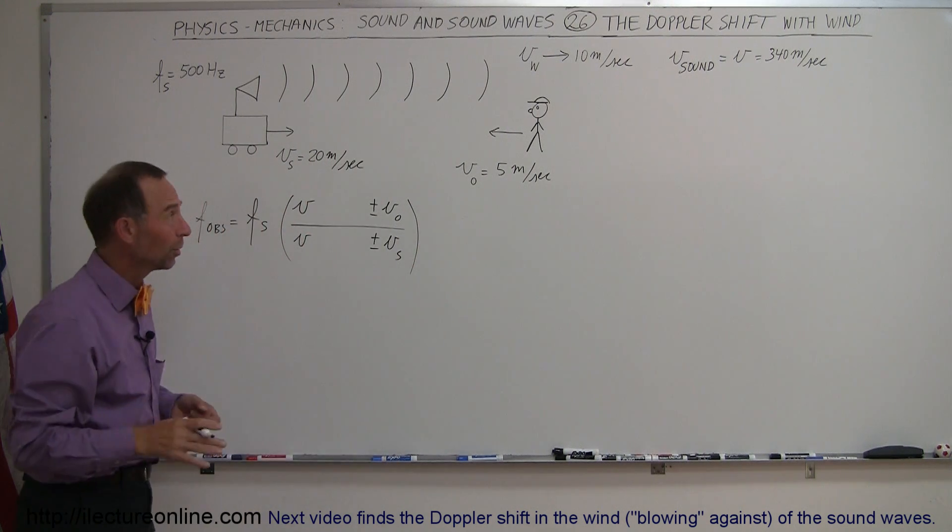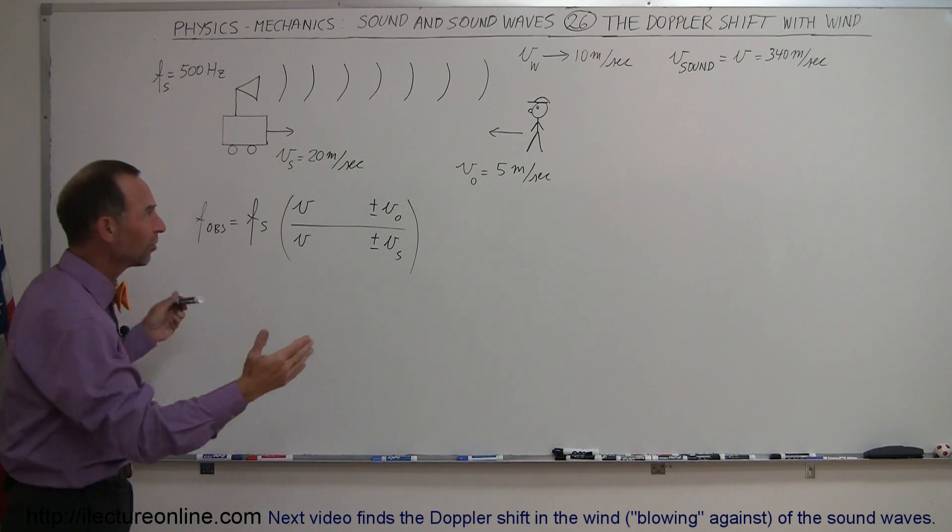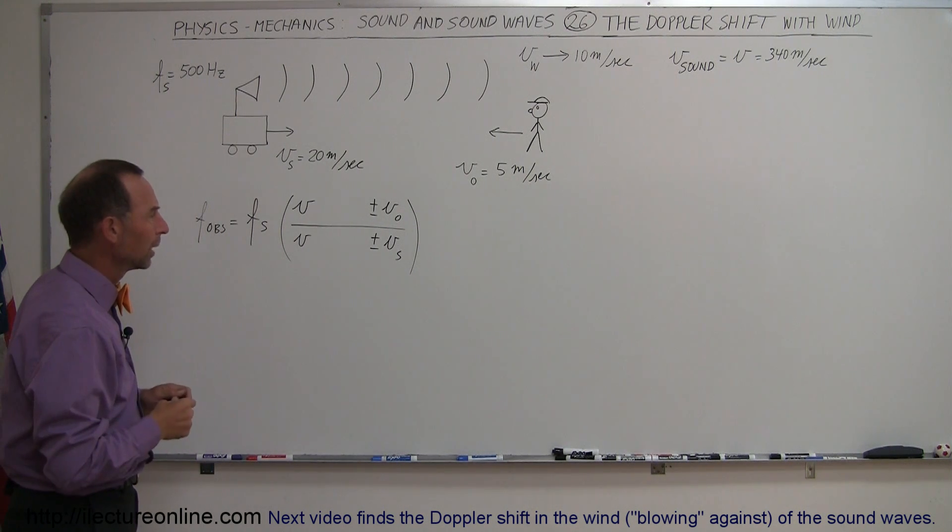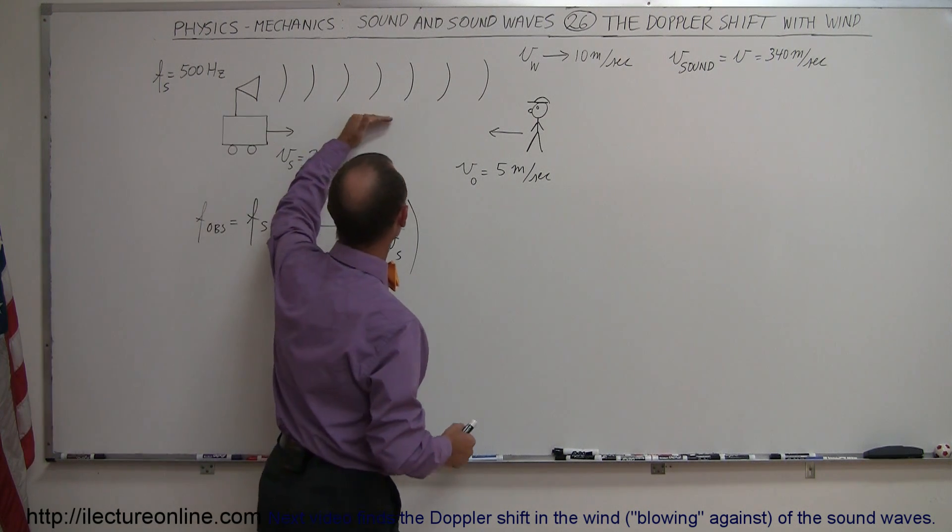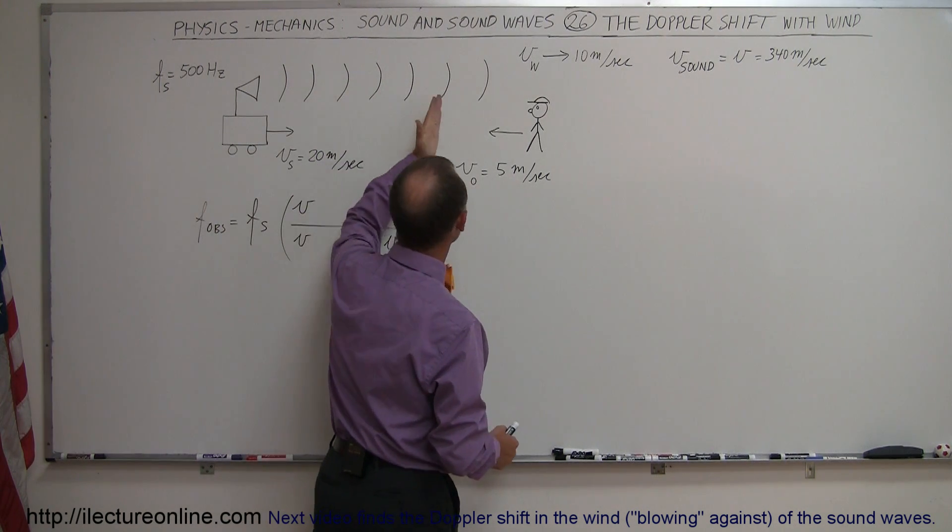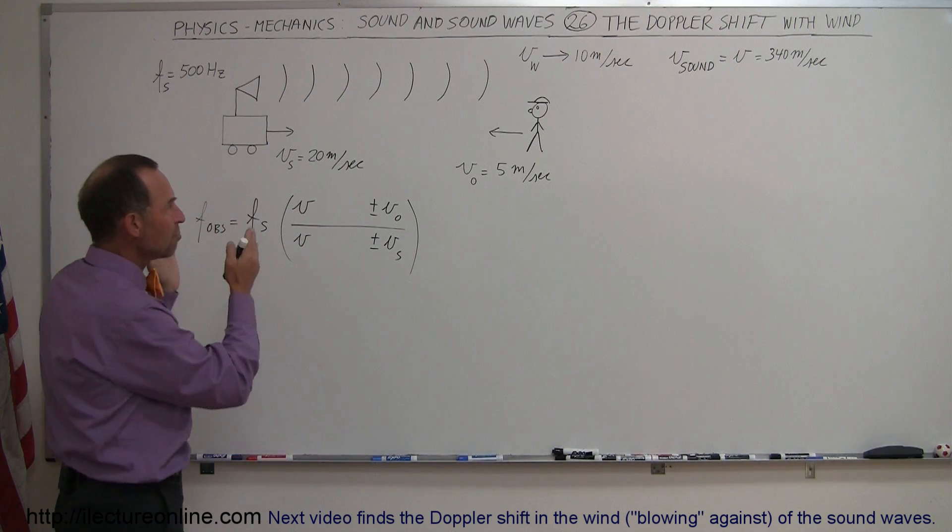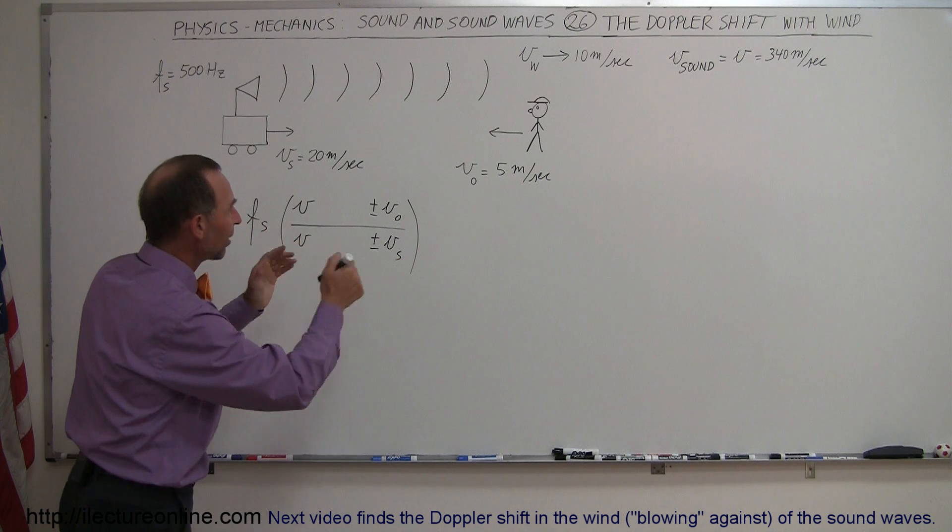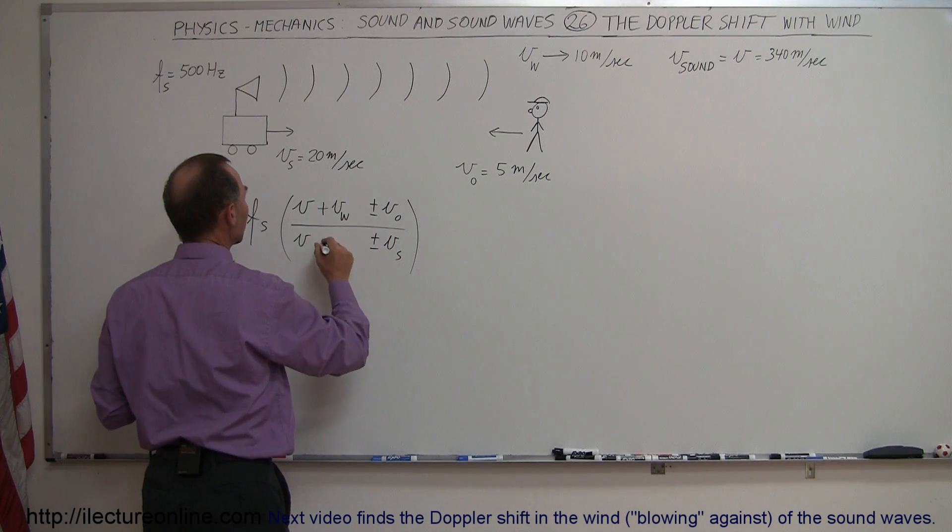Of course, the plus or minus is determined by figuring out whether or not the observer will hear higher or lower frequency, depending upon what they're doing. But in addition to that, the wind is blowing in the same direction as the movement of the sound waves towards the observer, which has the effect of making the motion of the sound waves faster.